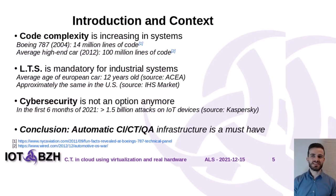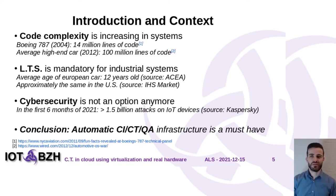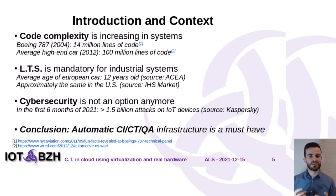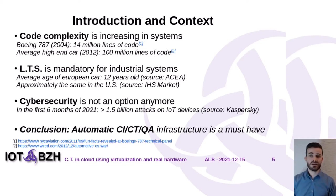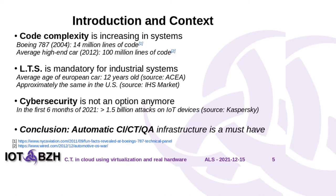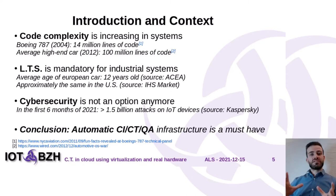Why is a QA system needed? There are several points — just three of them here. The code complexity is increasing in systems, and it's increasing really fast. For example, in 2004, a Boeing 787 was made of 14 million lines of code, whereas in 2012, an average high-end car is made of 100 million lines of code.